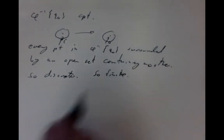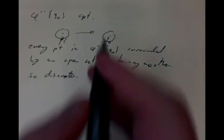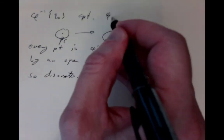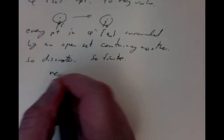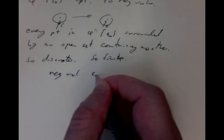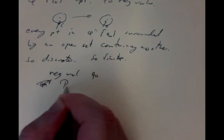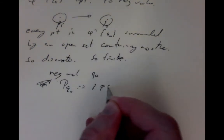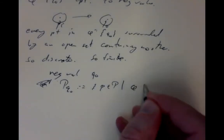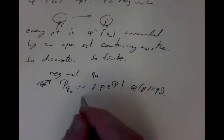So for any proper smooth map between equal-dimensional oriented manifolds, if q₀ is a regular value, the preimage P_{q₀} = {p ∈ P : φ(p) = q₀} is a finite set.